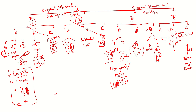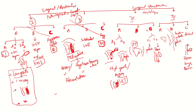FIGO staging includes grade, histology, LVSI, and molecular classification. The role of molecular classification: when a biopsy or hysterectomy specimen is analyzed, if POLE mutations are present and there is extension into the cervical stroma — normally stage 2A — it is not considered stage 2A but rather reclassified as stage 1, with the suffix 'm' added to denote POLE mutations.